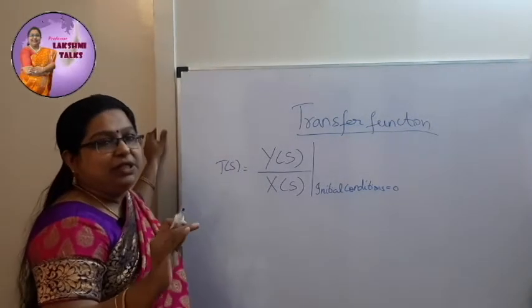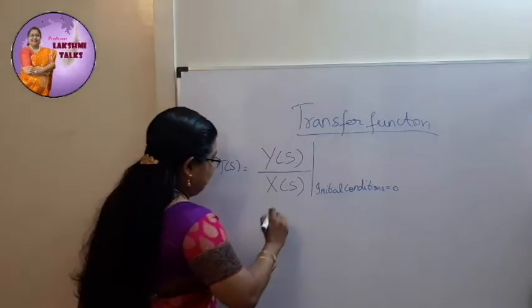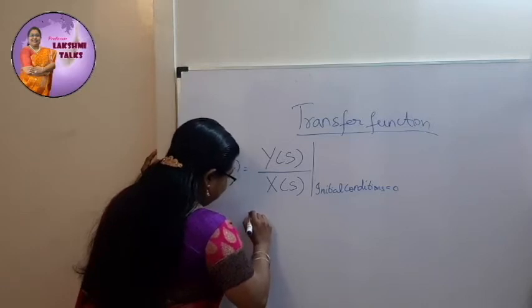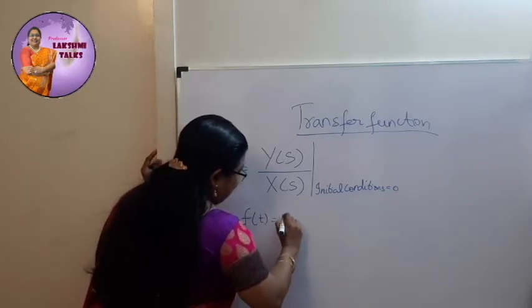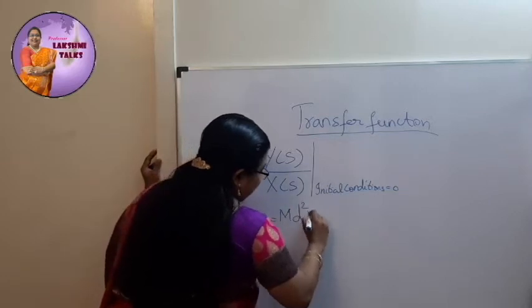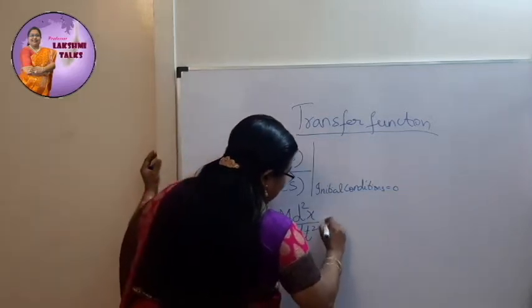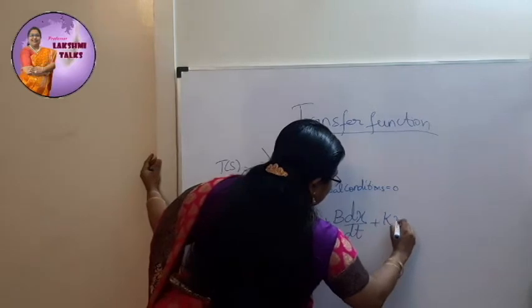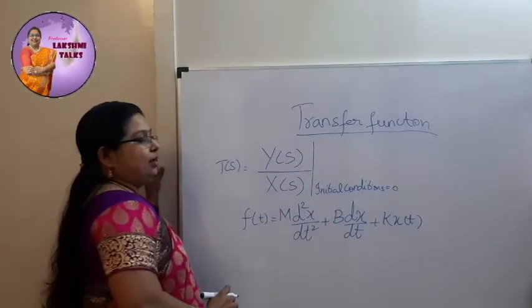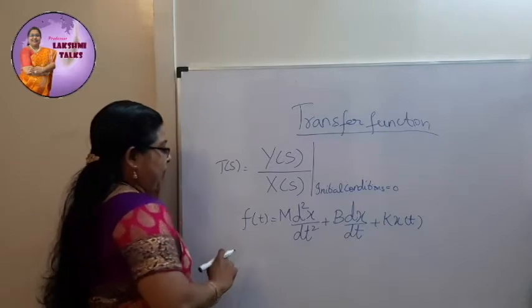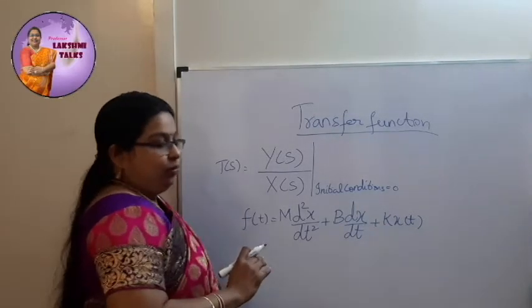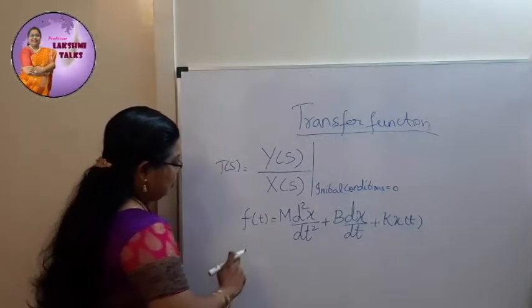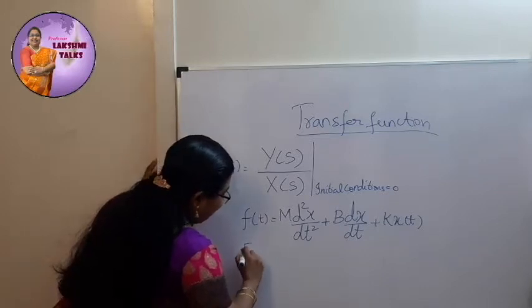Now we will see a simple mass-spring-damper system differential equation. The mathematical formula representing the mass-spring-damper system is: f(t) = m·d²x/dt² + b·dx/dt + kx(t). Now the transfer function — the input is displacement and the output — let's see the Laplace transform. The Laplace domain representation is F(s).